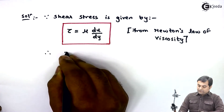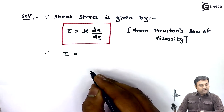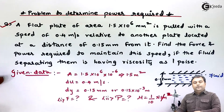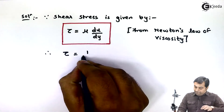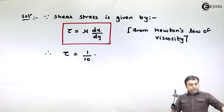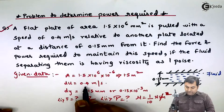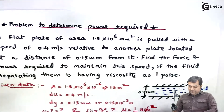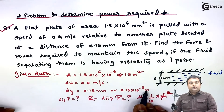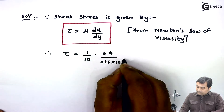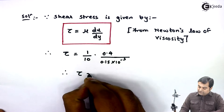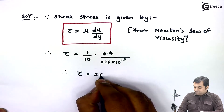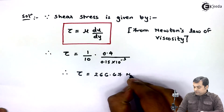Therefore, shear stress τ = μ × (du/dy) = (1/10) × (0.4 / (0.15 × 10⁻³)). This gives shear stress equal to 266.67 newton per meter square.